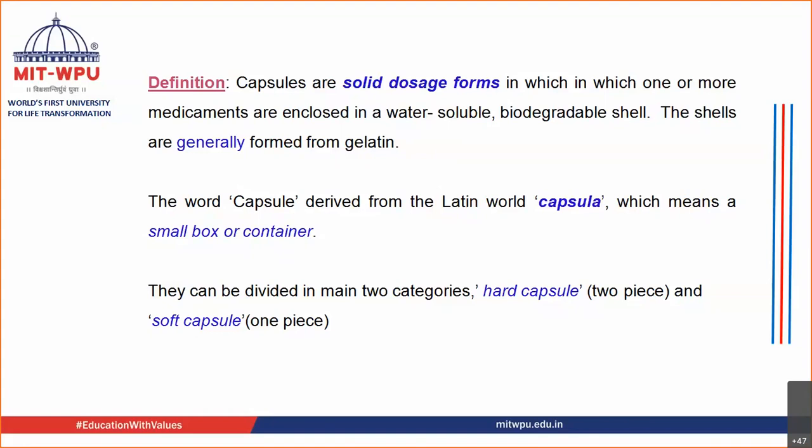There are many reasons why gelatin is chosen as the ingredient for capsule preparation. First of all, it is biocompatible — gelatin is also used as food material to increase viscosity of preparations, and is present in Chinese food. It is biocompatible, very easily available, and soluble in water.